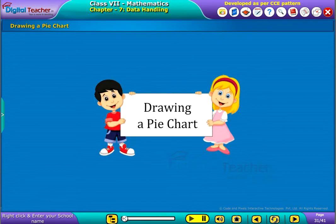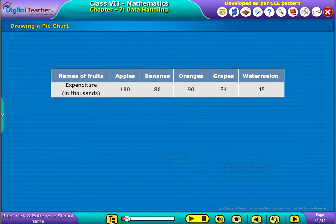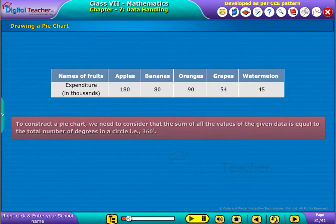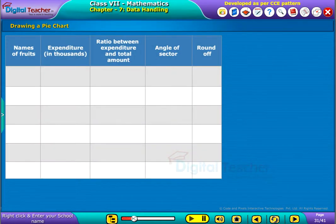Now let us learn about how data is presented on a pie chart. For example, let us consider the data as shown in the table. Before starting construction of a pie chart, remember that the sum of all the values of the given data is equal to the total number of degrees in a circle, that is 360 degrees. For that reason, each division represents a particular value of the components of data. Now let us start our calculation.